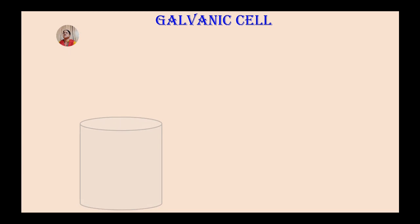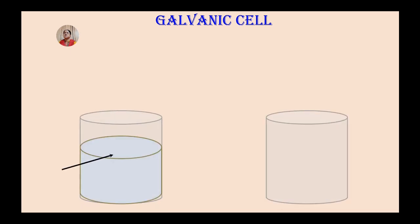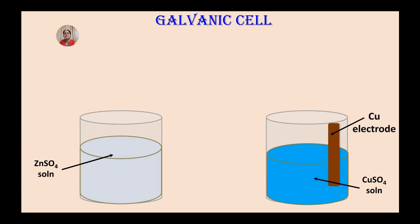A galvanic cell is the arrangement of two half cells in which zinc sulphate and copper sulphate solutions are filled. Copper rod is dipped in copper sulphate solution and zinc rod is dipped in zinc sulphate solution. These metallic rods are known as electrodes.